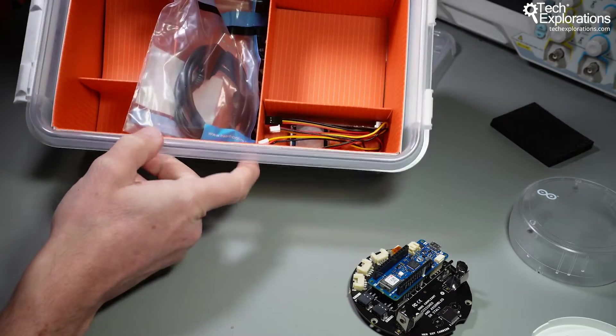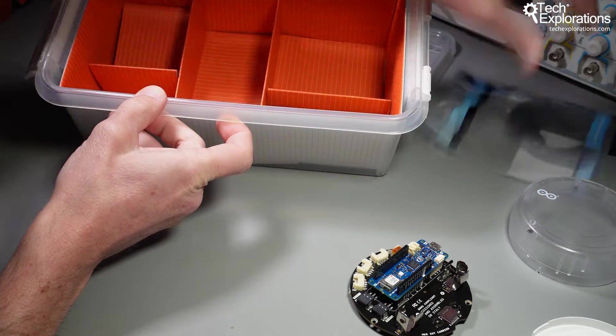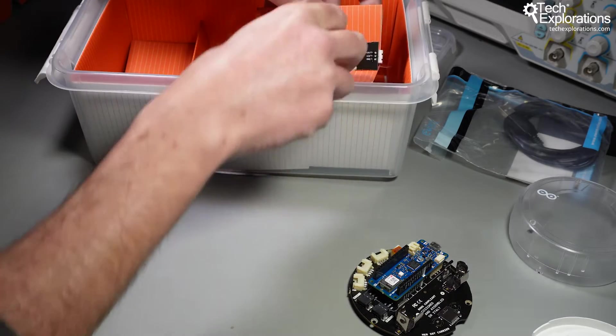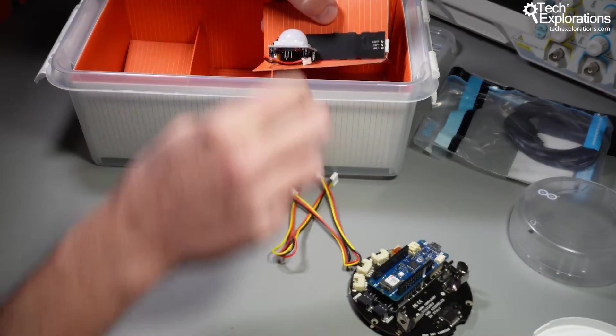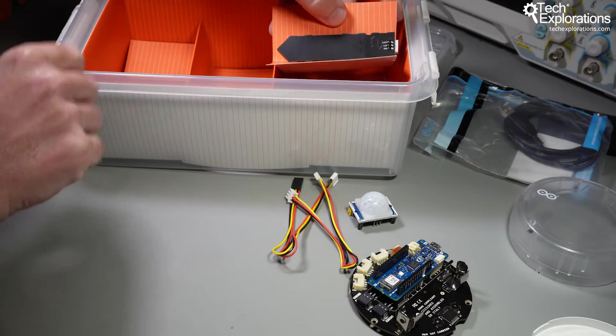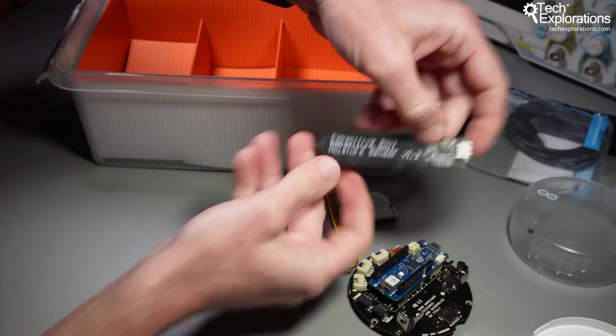Next up inside the box we've got a USB cable, a number of jumper wires, a PIR motion sensor, and a capacitive soil moisture sensor.